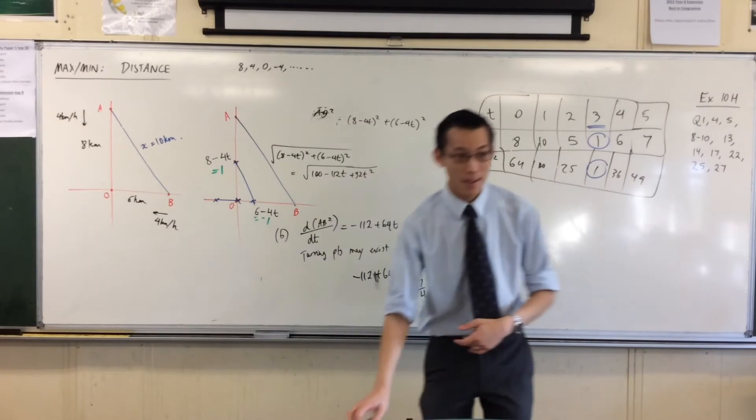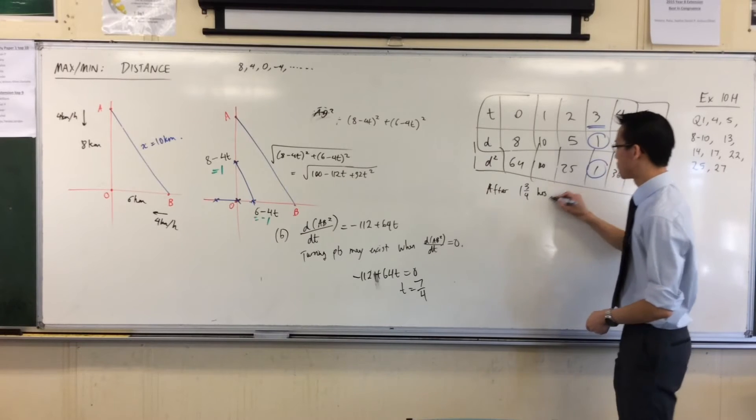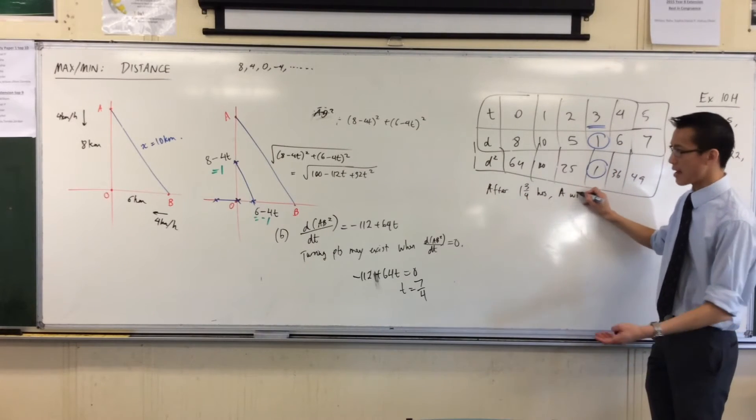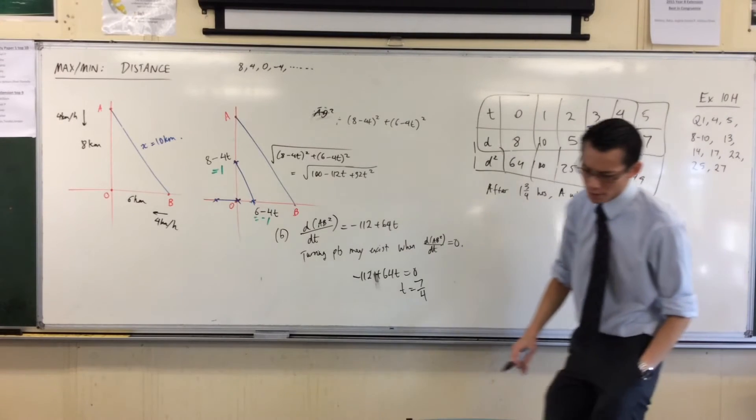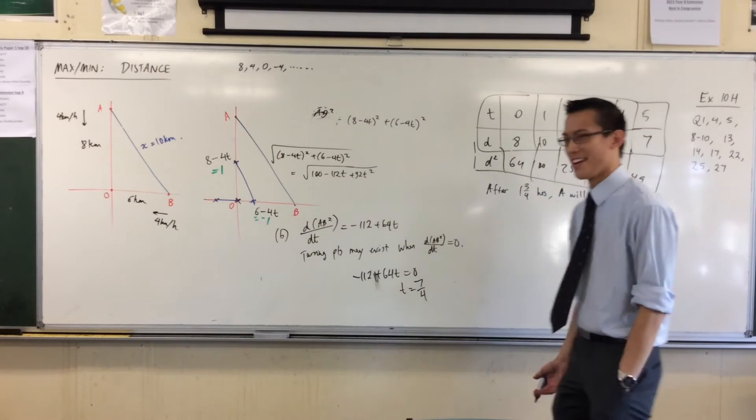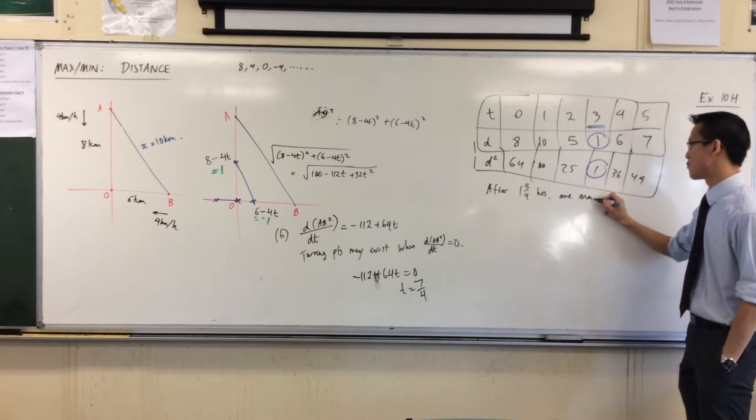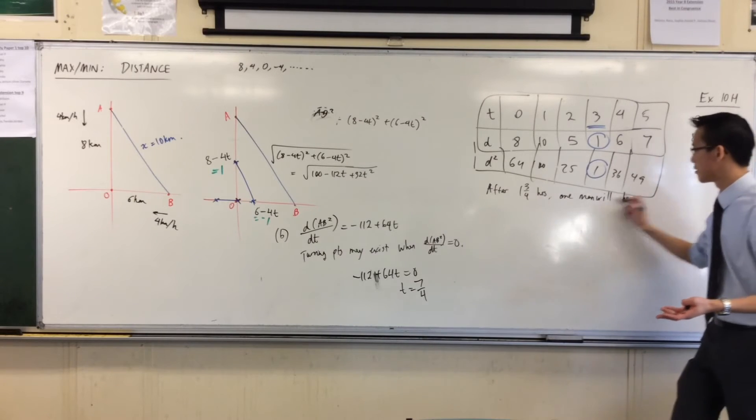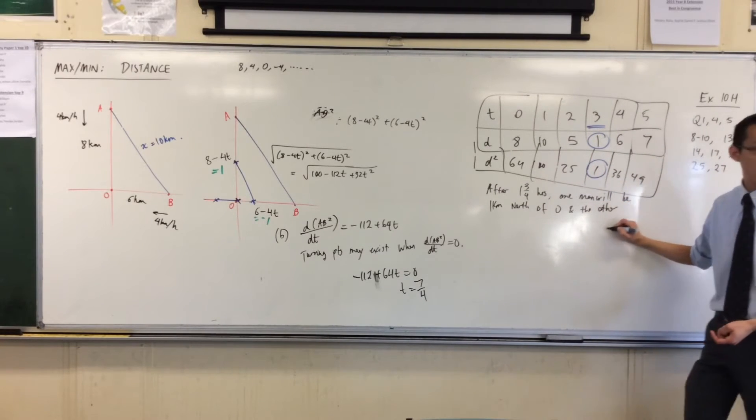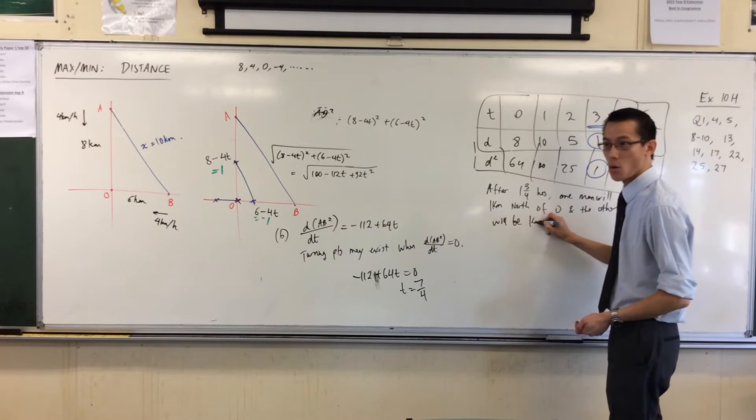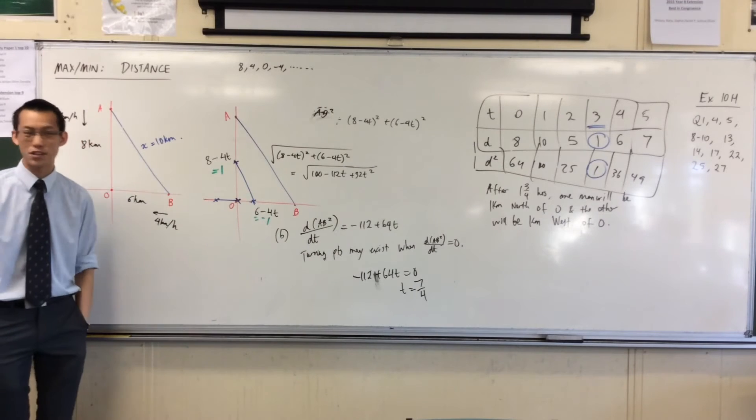So when I've got 7 over 4 here, because it's all over 4, this is really easy. This will be 8 minus 7, which is 1. And this one will be 6 take away 7. Now, that's negative 1, which means he's over here. He's gone past. Because my distance here is east, so he will have been, he'll be on the west side now. So I guess my answer would be, therefore, after one and three quarters hours, that's my time. A will be - and you've got to put it all in terms of bearings. North and east and so on. So I'm going to say after that time, one man will be one kilometer north of O, and the other will be one kilometer west of O, because he's gone past. So there will be the square root of two kilometers away from each other. Done.